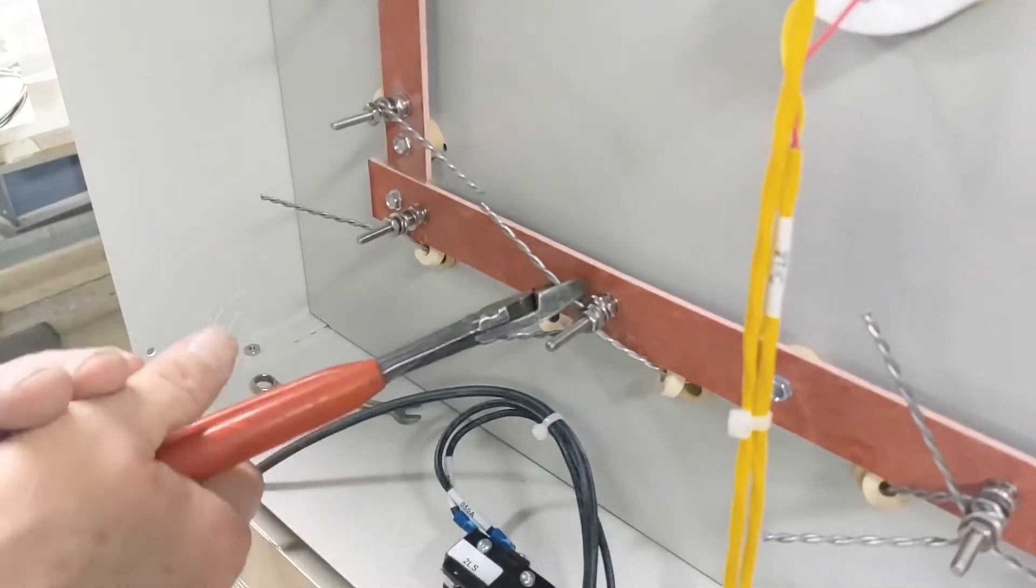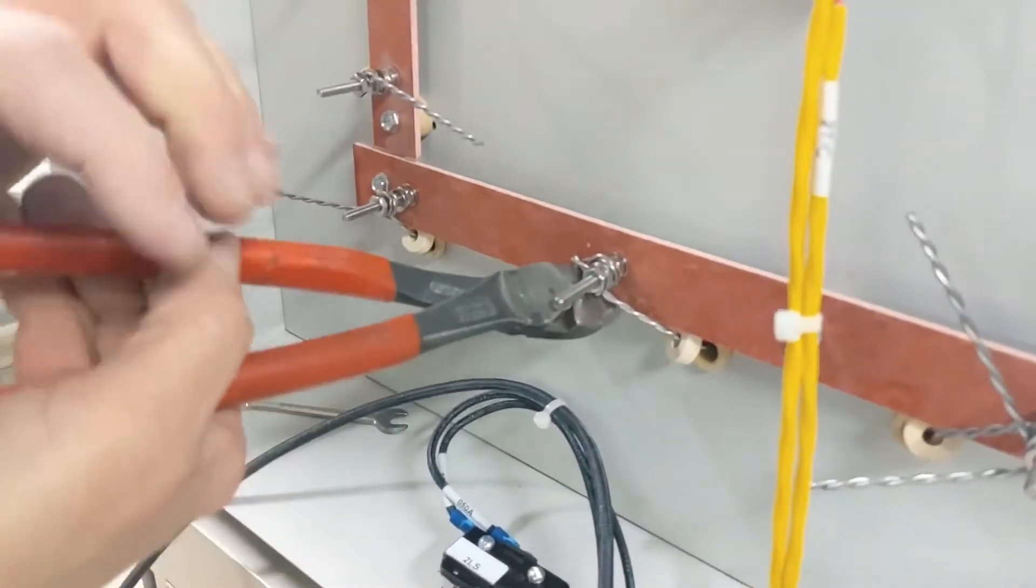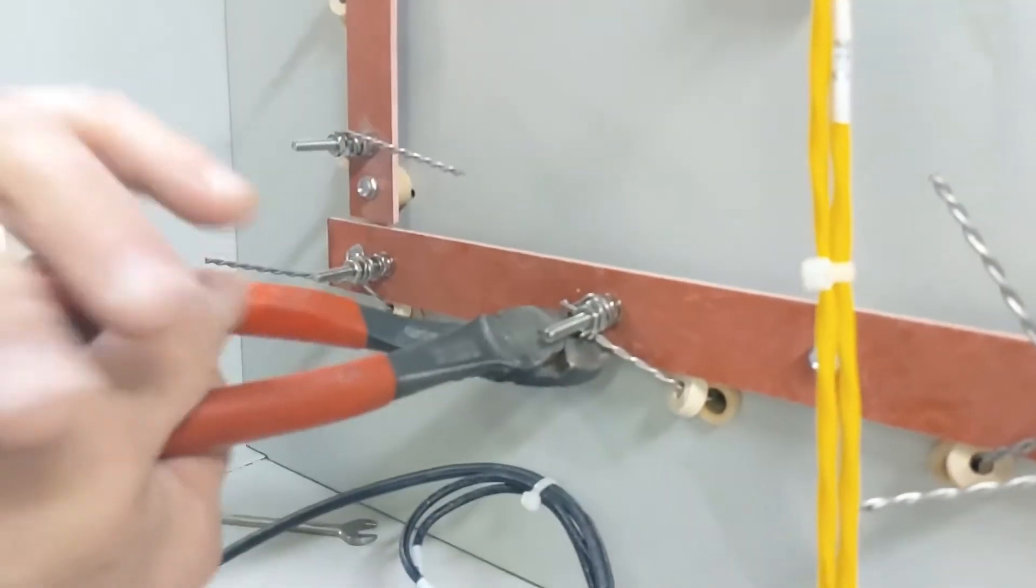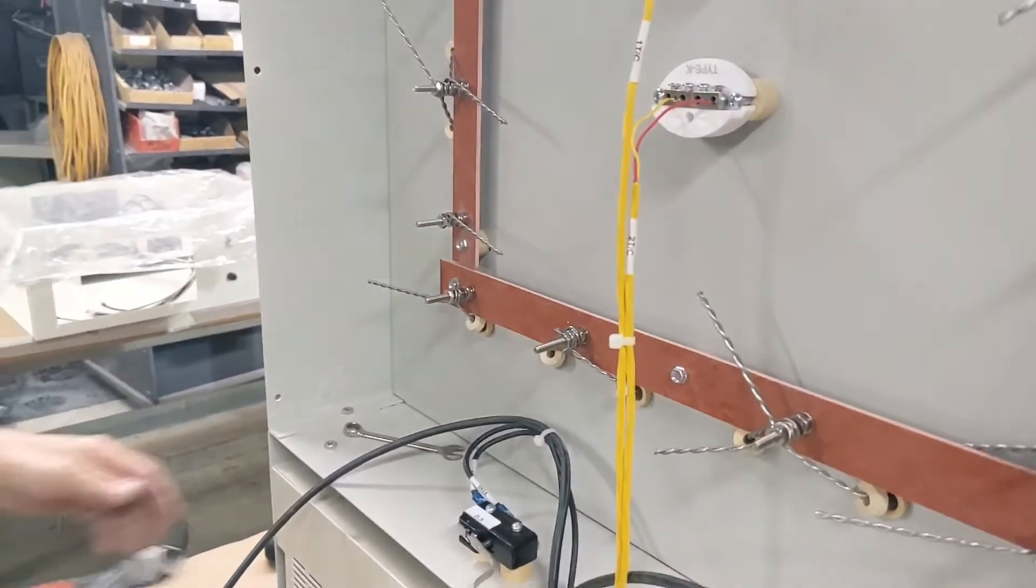Once the hex nut is tightened, the last step is to use a pair of diagonal cutters to snip off the excess element ends. Make sure you're wearing safety glasses for this as the element wire will spring off in any direction.